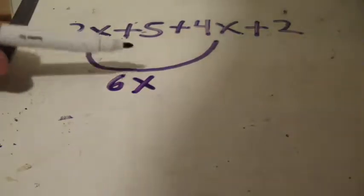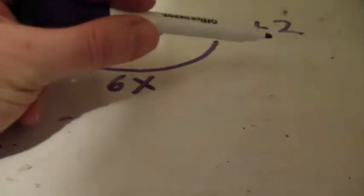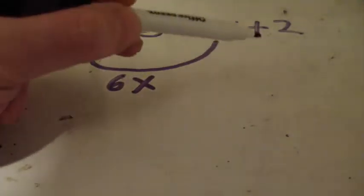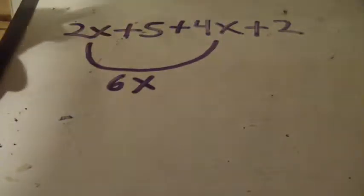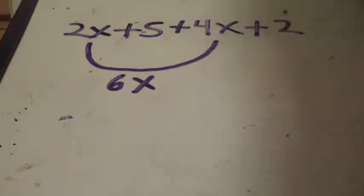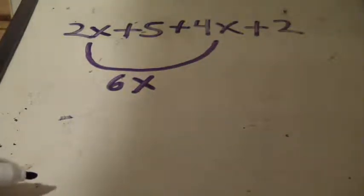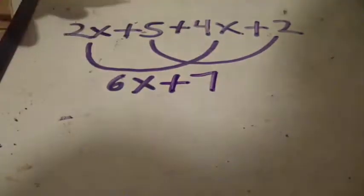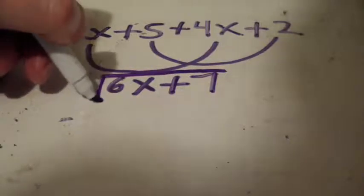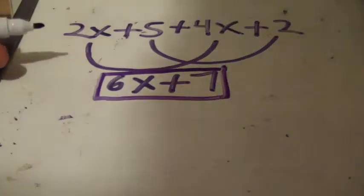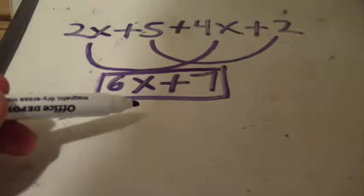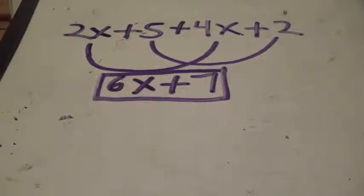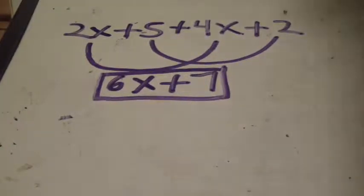Now what we have is these. We have five units here and two units of something. These are called constants. They are like terms because they are simply constant numbers with no variables attached to them. So we can then simply combine them. Five plus two is simply plus seven. So we're left with this statement. This is a binomial. It is simply 6x + 7. That's step one.